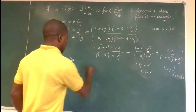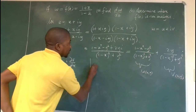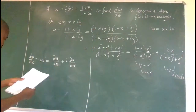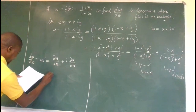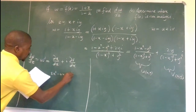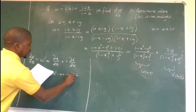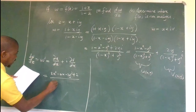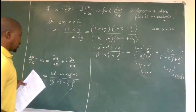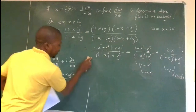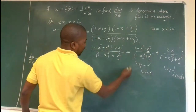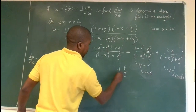For ∂u/∂x we apply the quotient rule. Recall that for f/g, the derivative is (g·f′ − f·g′) / g². Applying this to u, you end up with (2x² − 4x − 2y² + 2) all over [(1 − x)² + y²]².